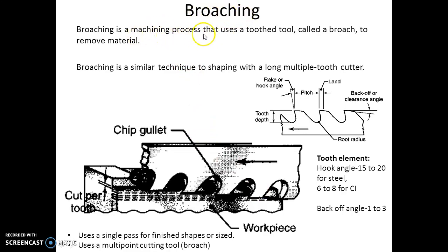Broaching is a machining operation that uses a tool called a broach. This is a simple geometry of the tool mentioned here - this is the workpiece which is to be cut, and this is the cutting tool having multiple teeth in this manner.